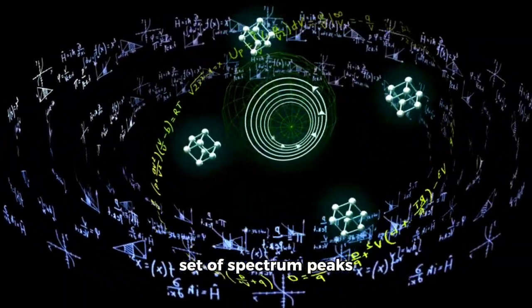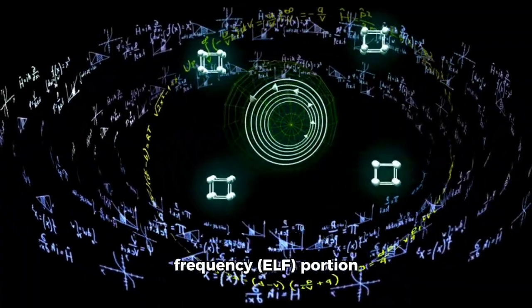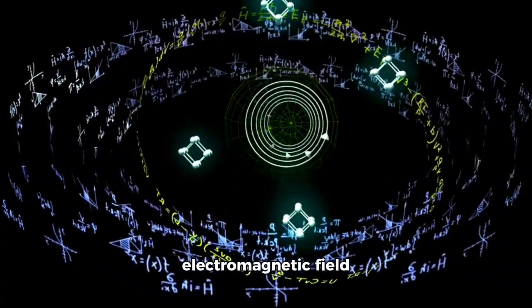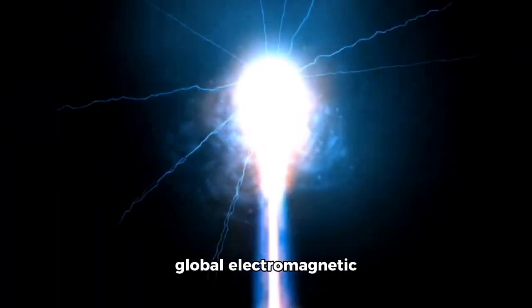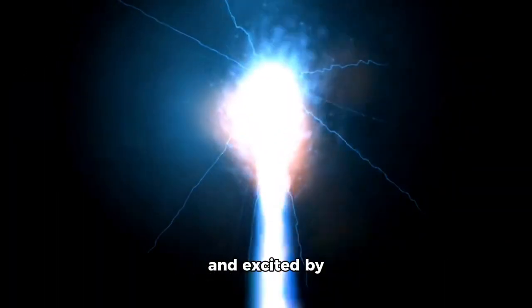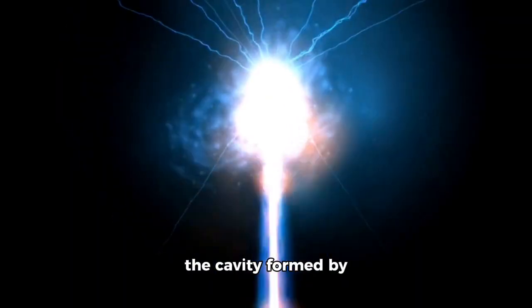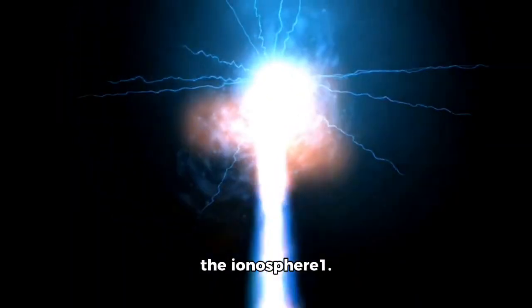The Schumann resonance refers to a set of spectrum peaks in the extremely low-frequency ELF portion of the Earth's electromagnetic field spectrum. These resonances are global electromagnetic resonances, generated and excited by lightning discharges in the cavity formed by the Earth's surface and the ionosphere.